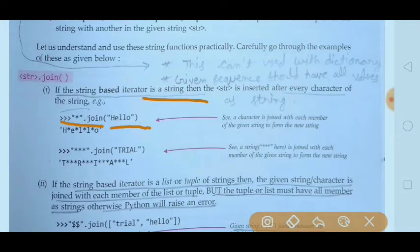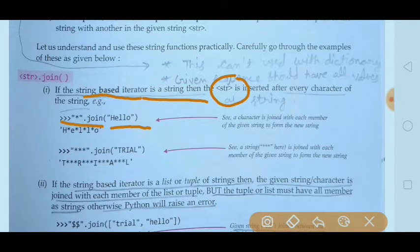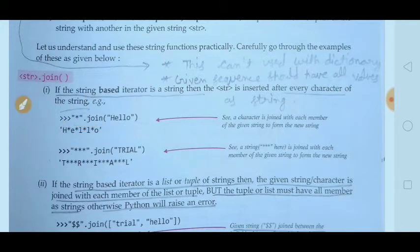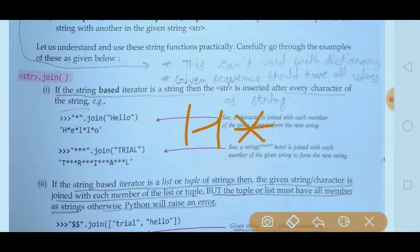In the argument we are providing a string. If the string-based iterator is a string, then str is inserted after every character of that string. So the star will appear after every character — first H, then star — and will appear after every character but not after the ending character of the string.